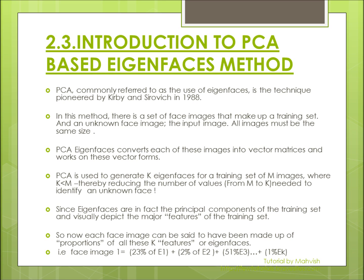It works on their vector forms. PCA — principal component analysis — is used to generate K Eigenfaces for a training set of M images, where K is less than M. That is, if a training set consists of 200 images, then the Eigenfaces calculated using PCA will be, for example, 150. We would select the most significant Eigenfaces for 200 training set images, thereby reducing the number of values needed to identify an unknown face from 200 to 150.